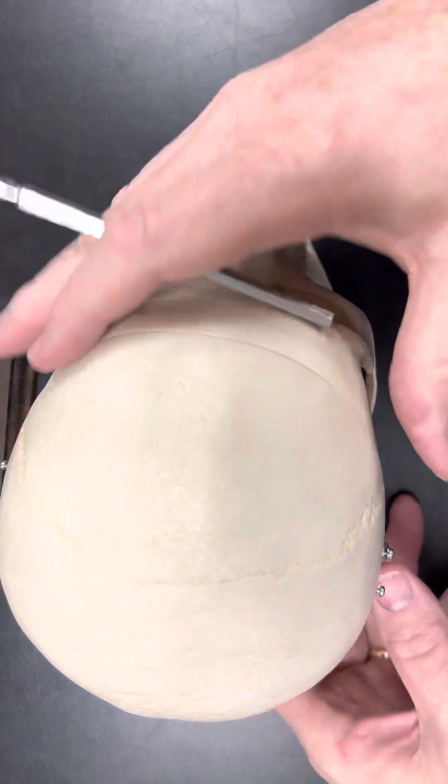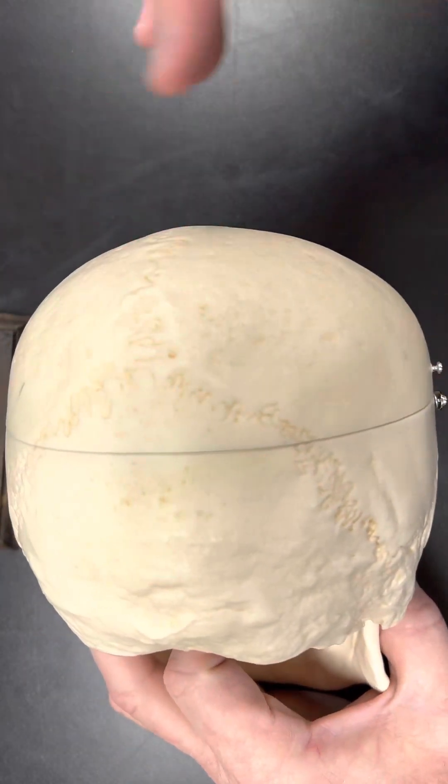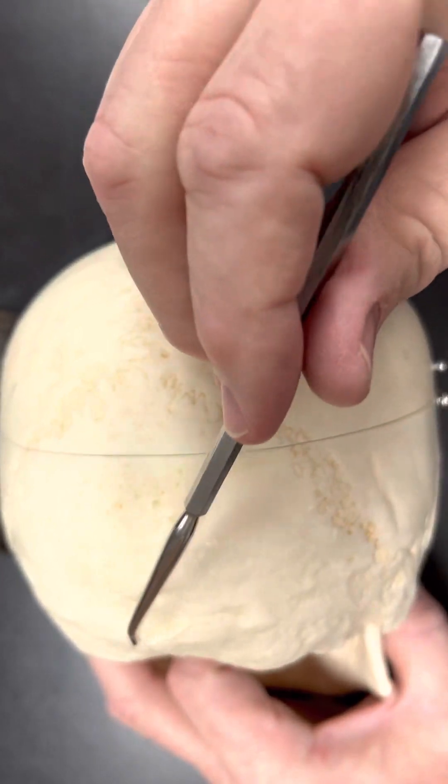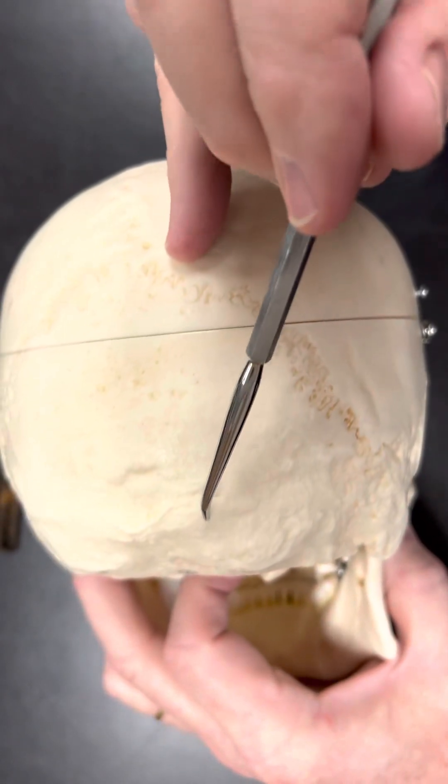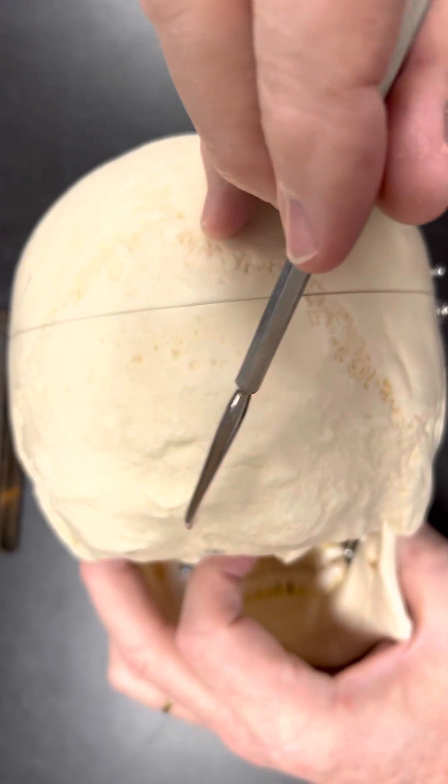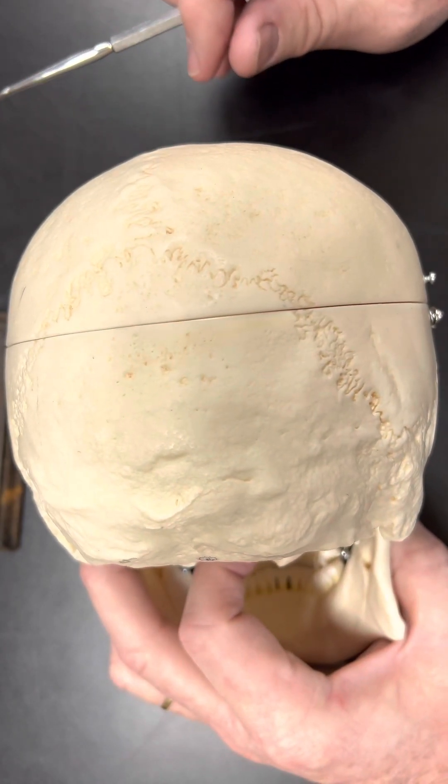And what we'll see down in here is there's actually a little bump that's right in here, and this is called your external occipital protuberance. If you feel the back of your head, you will actually feel the external occipital protuberance. It's a little bump that is on there.